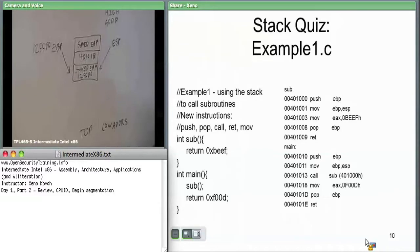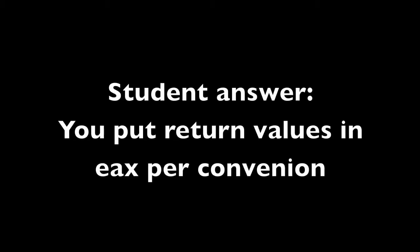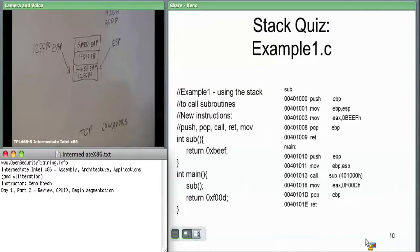The subroutine does move ESP to EBP, and then the only other thing it does is move hex BEEF to EAX. Per convention on x86, EAX is the register used to store return values. In the C code we're doing return hex BEEF, so in assembly we move hex BEEF to EAX so that the calling function, when it checks the return value, knows to always check EAX.